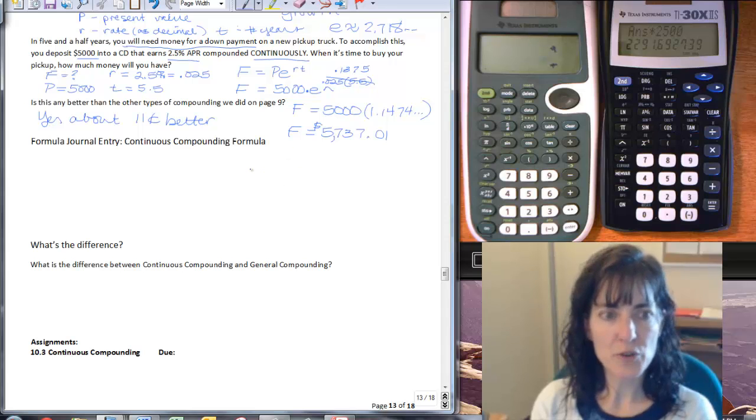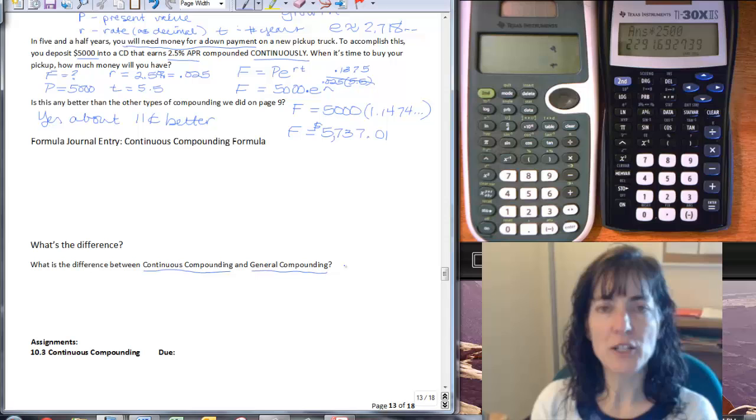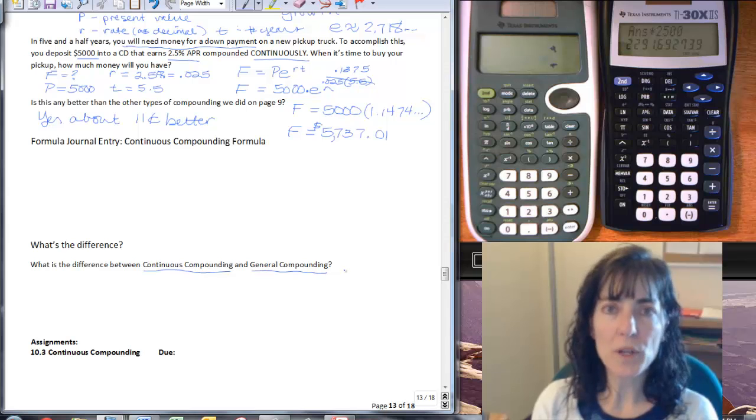So we've done the formula journal entry. Now we want to talk about what's the difference, and we want to compare two concepts: continuous compounding and general compounding, because we want to be able to tell when we're looking at a scenario which formula we need to use.